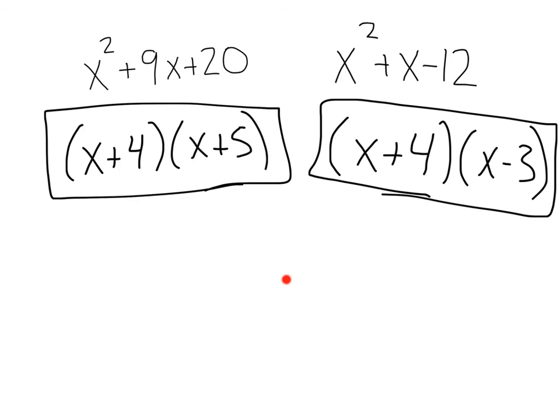And, the last thing before I go, just to remind you that multiplication is commutative, which means you could switch the order. So, x plus 4 times x plus 5 would be the same as x plus 5 times x plus 4. Same thing over here. We could have written this x minus 3 times x plus 4 and we would still be good to go. Have fun factoring, my friends.